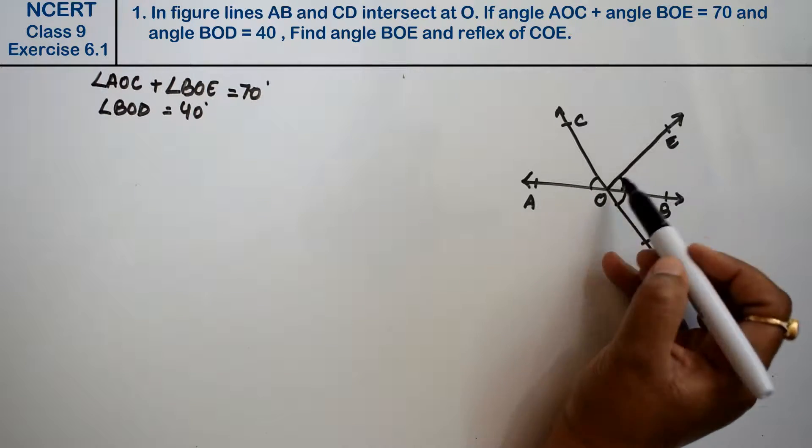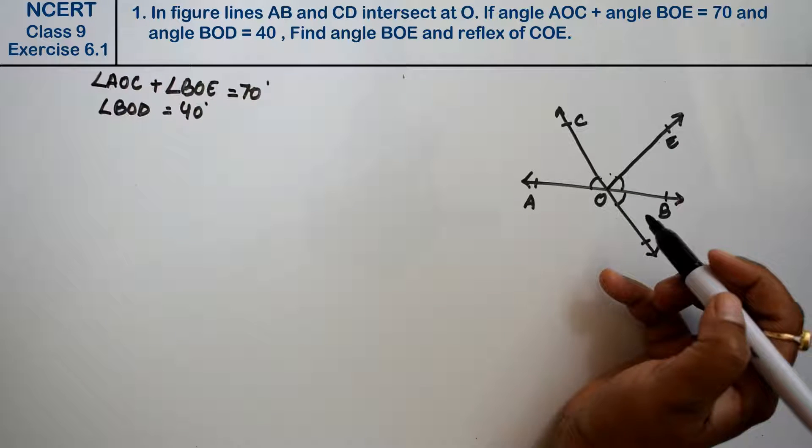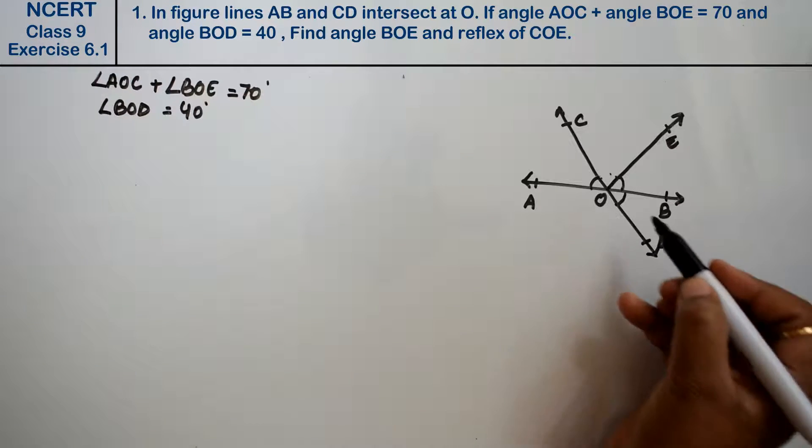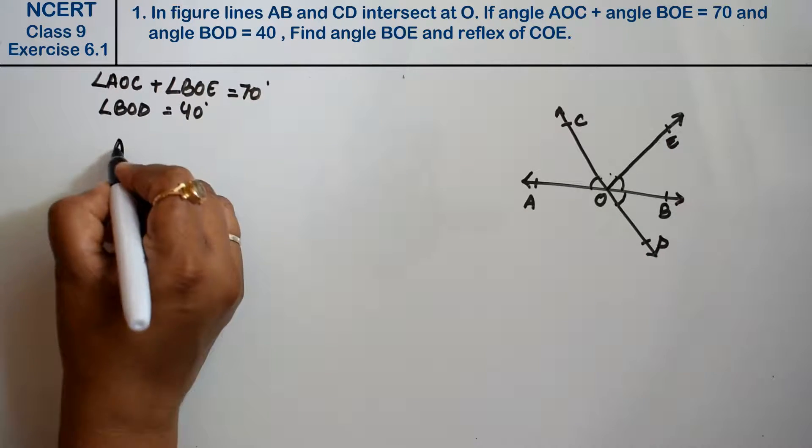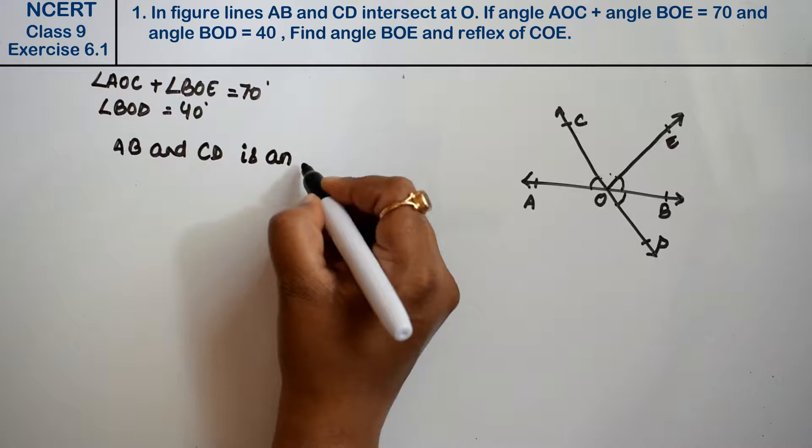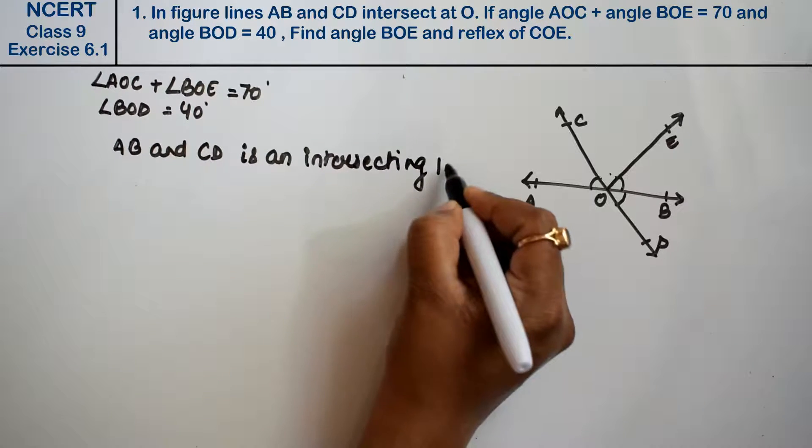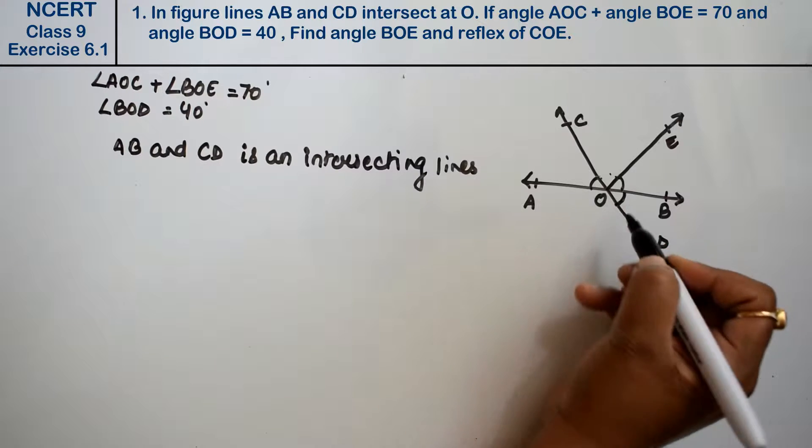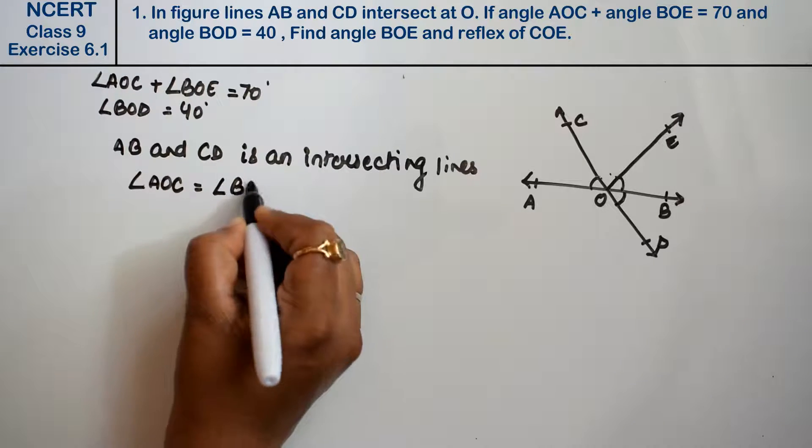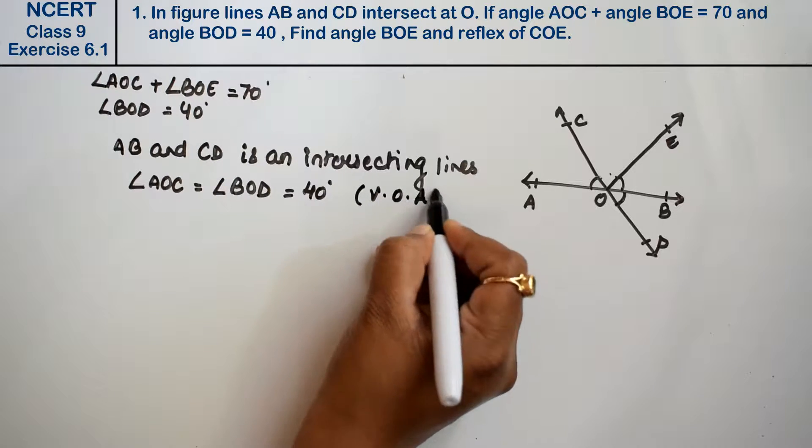AB and CD are intersecting lines. Angle AOC equals angle BOD, which is 40 degrees, because these are vertically opposite angles.